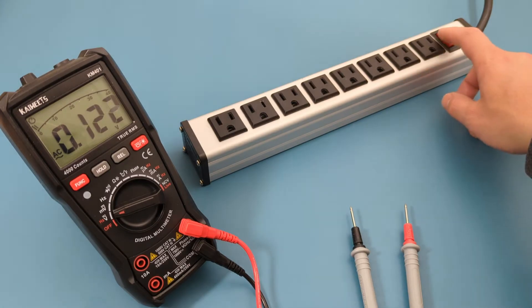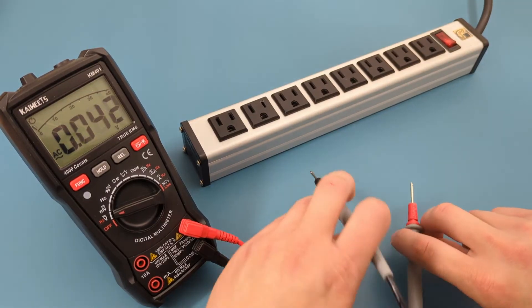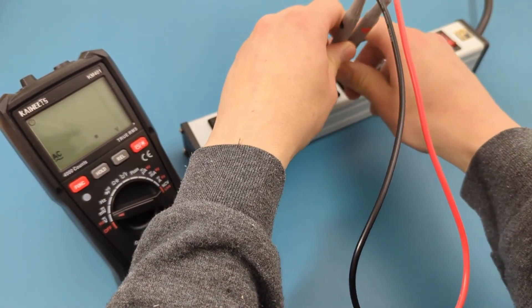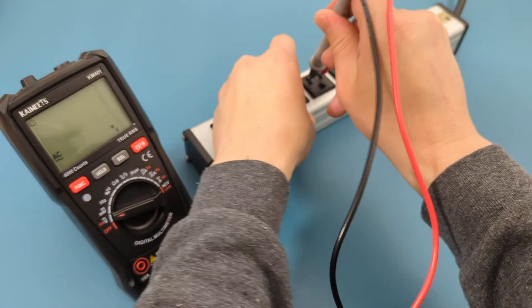First, I'm going to measure the voltage coming out of the outlet. Insert the probe leads into one of the AC outlets. The reading shows 120 volts.